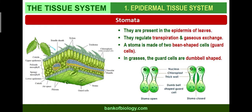The second part is stomata. Stomata help in the exchange of gases in plants and are present in the leaf epidermis. They regulate transpiration and exchange of gases. They have two bean-shaped guard cells. In grasses, the guard cells are dumbbell-shaped. The outer walls of guard cells away from the stomatal pore are thin, and the inner walls towards the stomatal pore are thick.